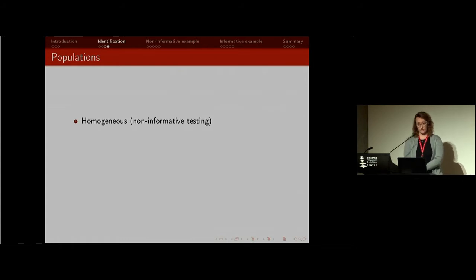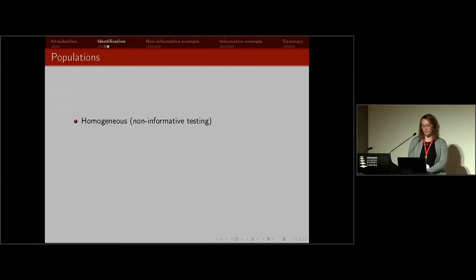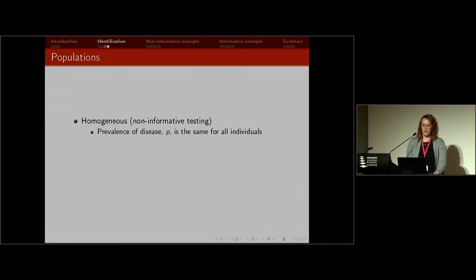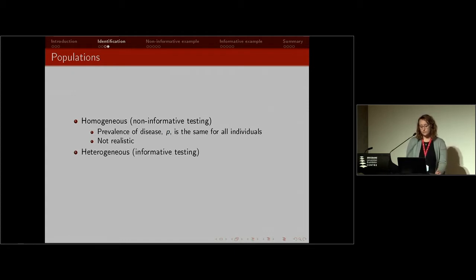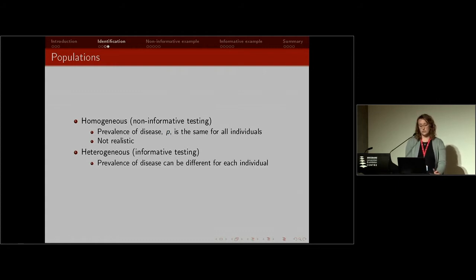There are also two types of populations to consider. Most past group testing papers have dealt with homogeneous testing, which we call non-informative testing, where we assume all individuals have the same probability of disease. This is not very realistic — if you take 100 people, they probably don't all have the same probability of contracting HIV, for instance. Another type is heterogeneous, or informative testing, where we allow the prevalence of disease to differ for each individual based on different risk behaviors, demographics, or medical information.